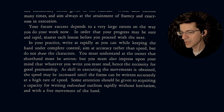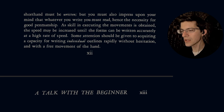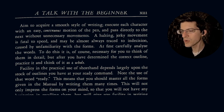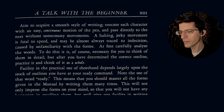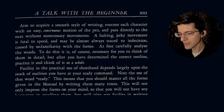"Aim at accuracy rather than speed, but do not draw the characters. You must understand at the outset that shorthand must be written, but you must also impress upon the mind that whatever you write you must read — hence the necessity for good penmanship. As skill in executing the movements is obtained, the speed may be increased until the forms can be written accurately at a high rate of speed. Some attention should be given to acquiring a capacity for writing individual outlines rapidly without hesitation and with a free movement of the hand. Aim to acquire a smooth style of writing. Execute each character with an easy, continuous motion of the pen, and pass directly to the next without unnecessary movements. A halting, jerky movement is fatal to speed and may be almost always traced to indecision caused by unfamiliarity with the forms. At first, carefully analyze the words. To do this, it is of course necessary to think of them in detail, but after you have determined the correct outline, practice it, and think of it as a whole."